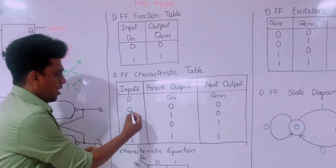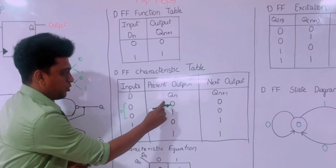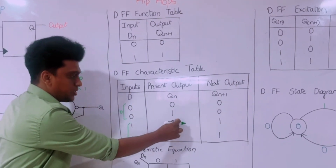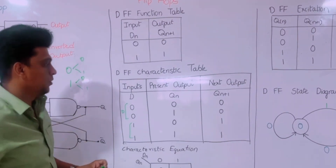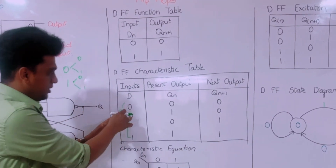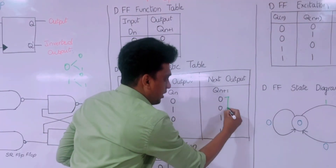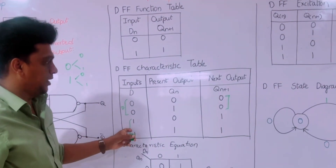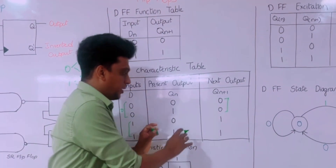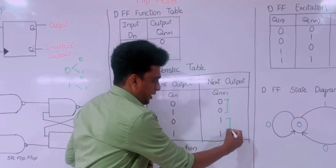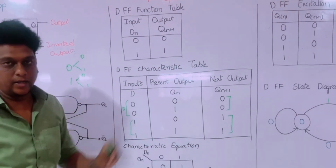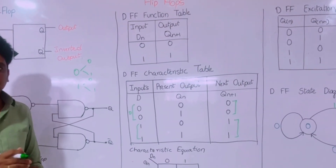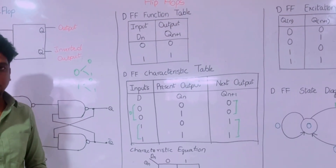Whenever the input is zero, there are two conditions: 0 and 1. And for one, there are two conditions: 0 and 1. Whenever the data is zero, we are getting the output zero. Whenever the data is one, it does not depend on the present state — it just directly comes whatever is in the data. So it is the simplest used method. Whenever we need simple memory logic, we can use this D flip-flop.